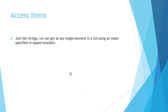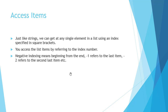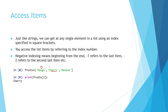Next, we will see how to access items in the list. Just like strings, we can get any single element in the list using the index specified in square brackets. We can access the list item by referring to the index number. We also have a list named 'fruits' which contains mango, cherry, and banana. Mango has index 0, cherry has index 1, and banana has index 2. So to access cherry, we write fruits[1] and it will print cherry.